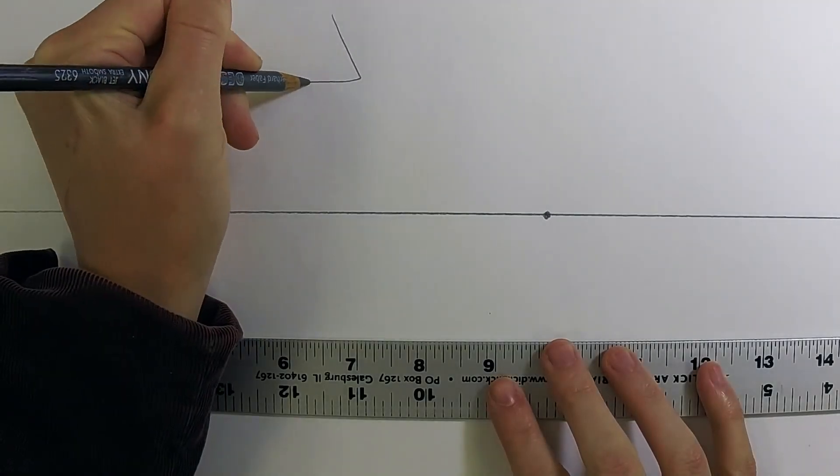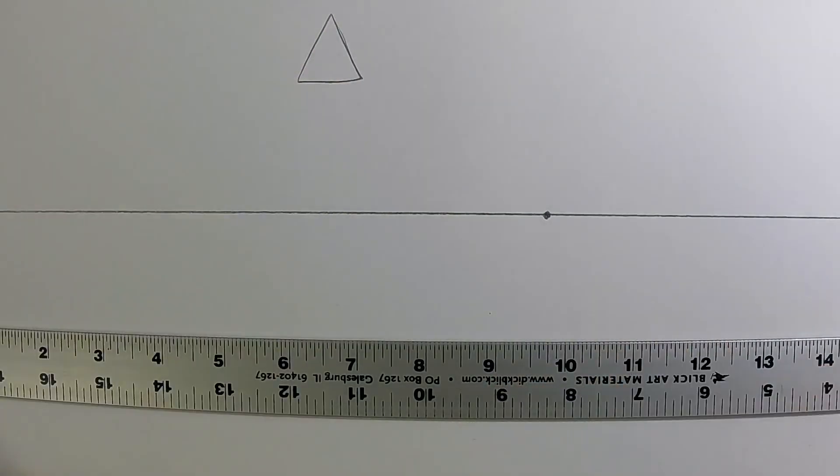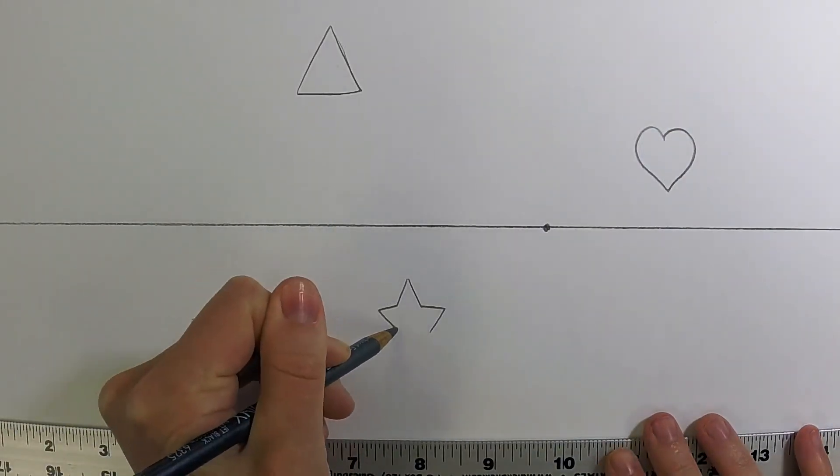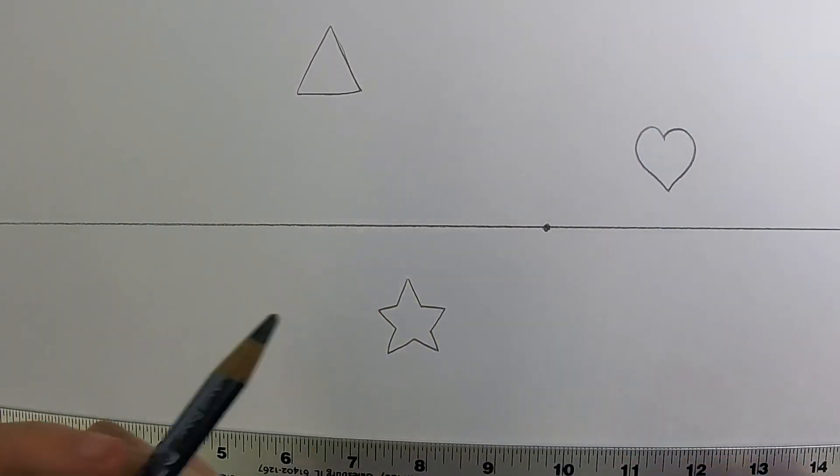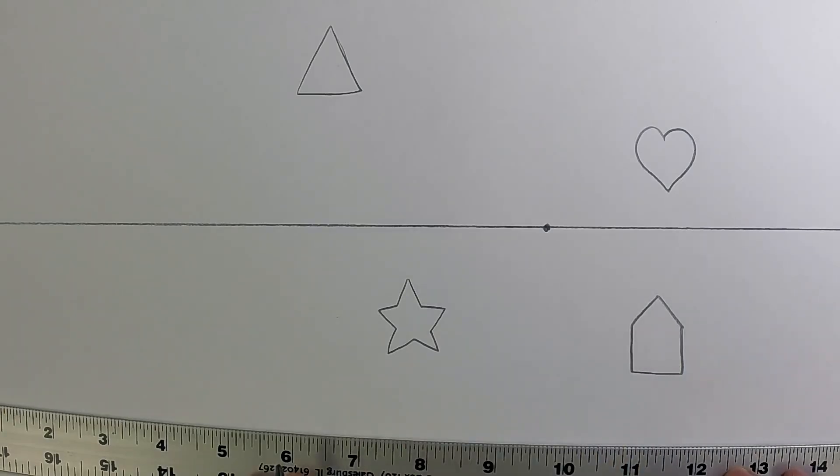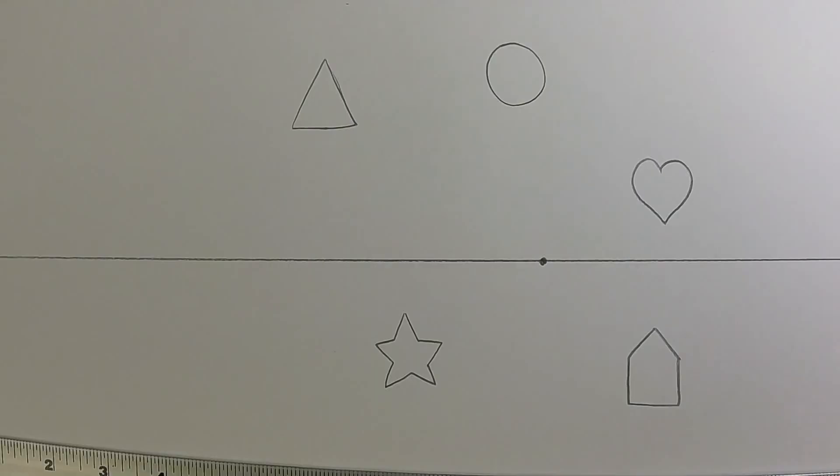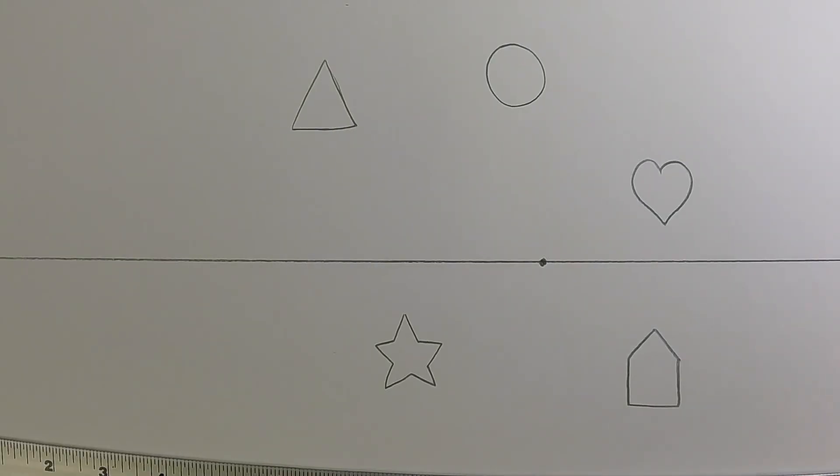Next we're going to just draw a few different shapes, so I'll try and go for a little bit of a variety here, and what we're going to do next is draw some converging lines.